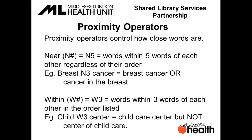Proximity operators are used to combine terms to express a single concept that contains multiple words and can be expressed in different ways. They control how close words are to each other, the idea being that words which are close to each other are more likely to be expressing a single idea. For example, the idea of breast cancer can also be expressed as cancer in the breast. Near is expressed with N and the maximum number of words separating the two terms, and will search for the terms in any order. So breast N3 cancer will retrieve breast cancer as well as cancer in the breast.